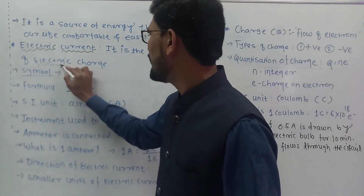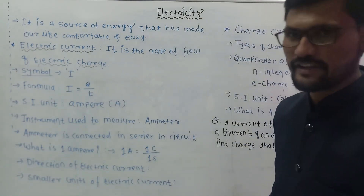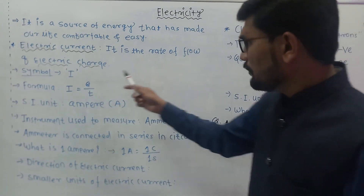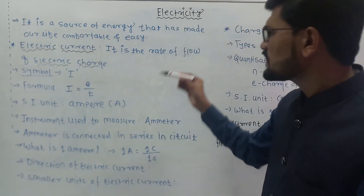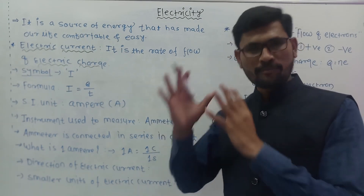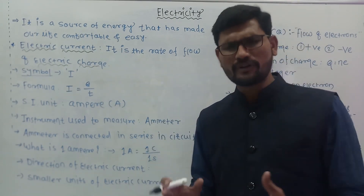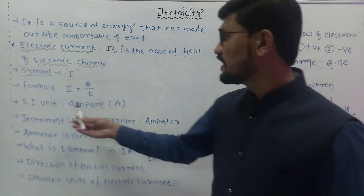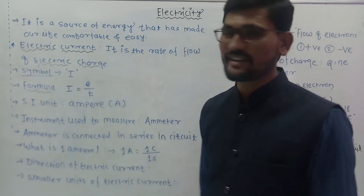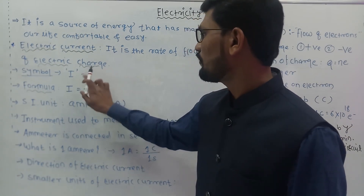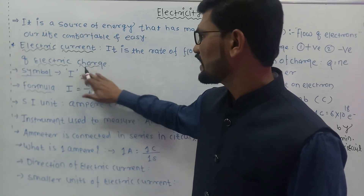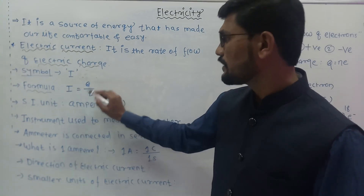What is this flow of electric charge? It is the electric current. We will emphasize on charge later, but first we need to understand electric current. Whenever charge flows per unit time, we call that electric current. From this statement we have one very important formula: I = Q / T, where I is the symbol of electric current.